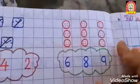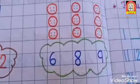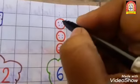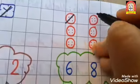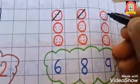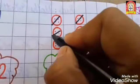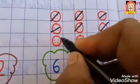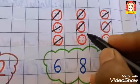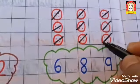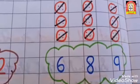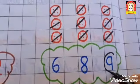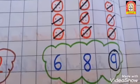Next one is button. What is this? Button. One, two, three, four, five, six, seven, eight, nine. How many buttons are here? Nine. So we have to circle on number nine.